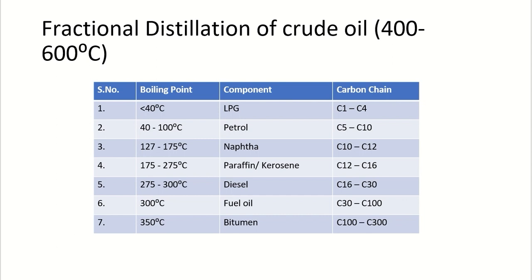Fractional distillation of crude oil occurs at 400–600°C. The boiling point of LPG is less than 40°C with carbon chain C1–C4; petrol is 40–100°C with C5–C10; naphtha is 127–275°C with C10–C12; paraffin or kerosene is 175–275°C with C12–C16; diesel is 275–300°C with C16–C30; fuel oil is above 300°C with C30–C100.